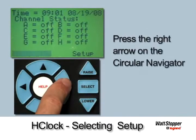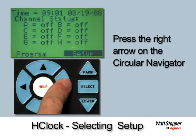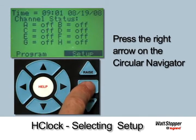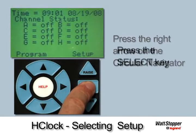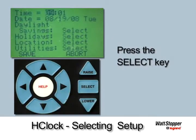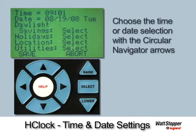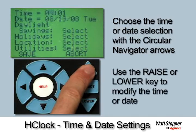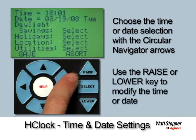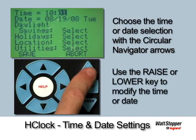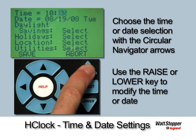To select Setup, simply depress the right arrow on the circular navigator until Setup flashes, then press Select. The time and date must now be set. The Setup screen will automatically show the time option flashing. Use the raise and lower keys to adjust the hour, then shift the option to minute using the right arrow.